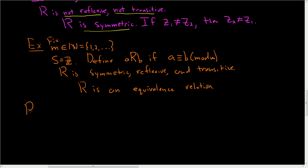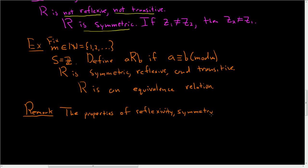Just a final remark: the properties of being reflexive, symmetric, and transitive are independent. We saw examples where some of the properties held and some didn't. So the properties of reflexivity, symmetry, and transitivity are completely independent of one another.